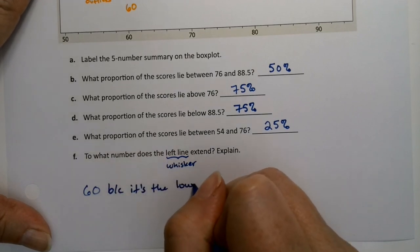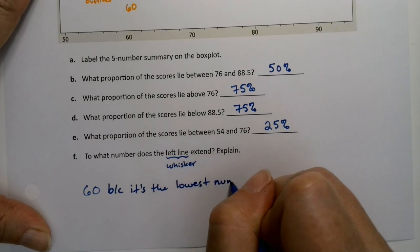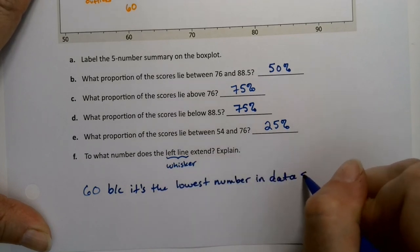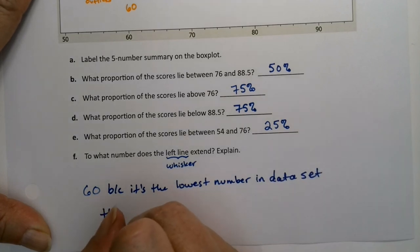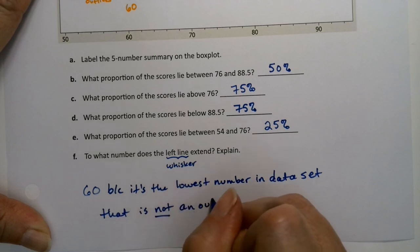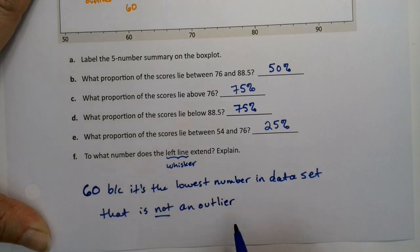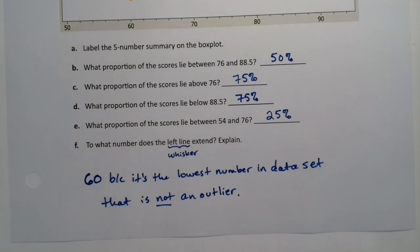It's the lowest number in the data set that is not an outlier. But you have to pick a number in the data set—you can't just pick a random number. So in this case, it had to be 60, because that's the lowest number that is not an outlier in our data set.